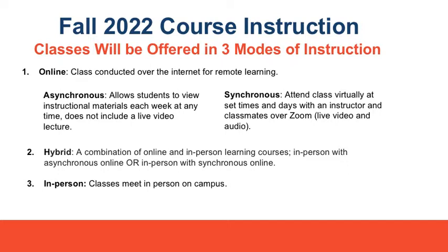Hybrid courses are a combination of online and in-person learning. Combination number one: in person with asynchronous. Combination number two: in person with synchronous. In-person asynchronous hybrid courses require students to attend part of the course in person on campus and attend the second part of the course over Zoom.